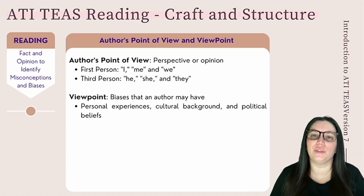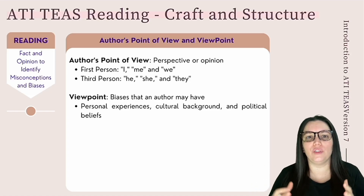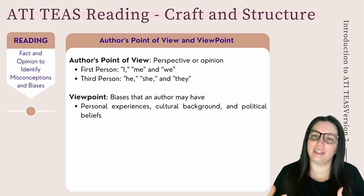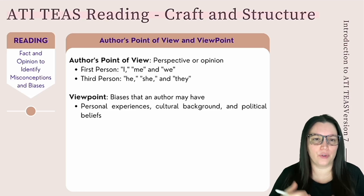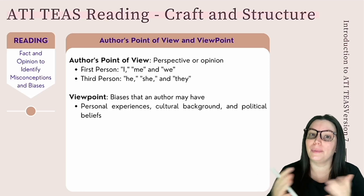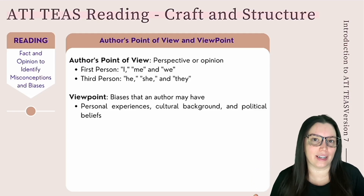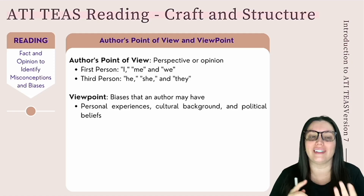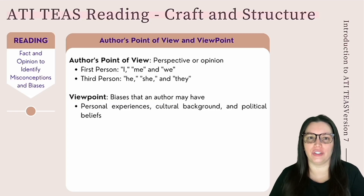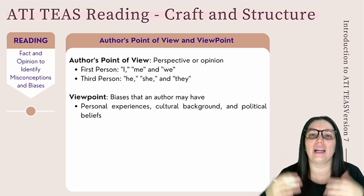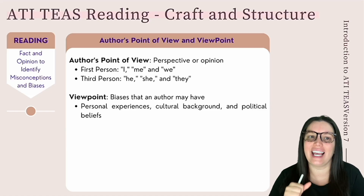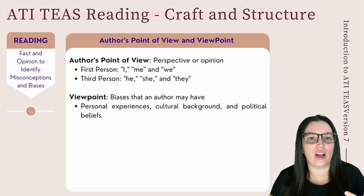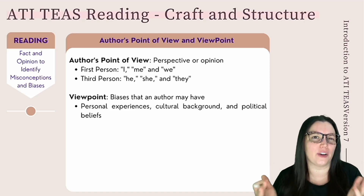An author's point of view is their perspective or opinion on a particular issue. This can be expressed directly or implied through language and tone. For example, an author might use first-person point of view to express their own opinions, identifiable by pronouns like I, me, and we. They might also use third-person point of view to discuss someone else's opinions or to present objective information, identifiable by pronouns like he, she, and they. The key is identifying the author's point of view to understand what the argument really is.